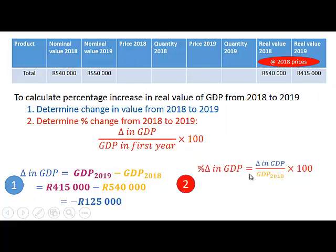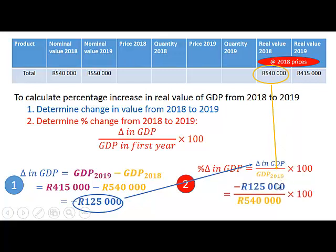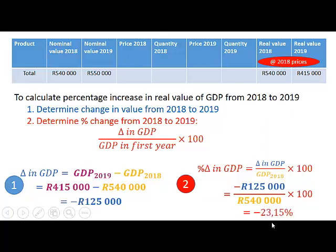Step two: the percentage change in GDP is equal to the change in GDP divided by the GDP for 2018 (found in the table), times 100. So it's minus 125,000 divided by 540,000, times 100, which gives us minus 23.15%.